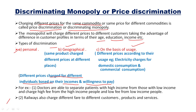For example, a doctor's fee charged to patients with high income versus low income will differ — patients with high income are charged a high fee and patients with low income are charged a low fee. Similarly, railways also charge different fees to different customers for their products and services. These are examples where price discrimination is followed on personal aspects.